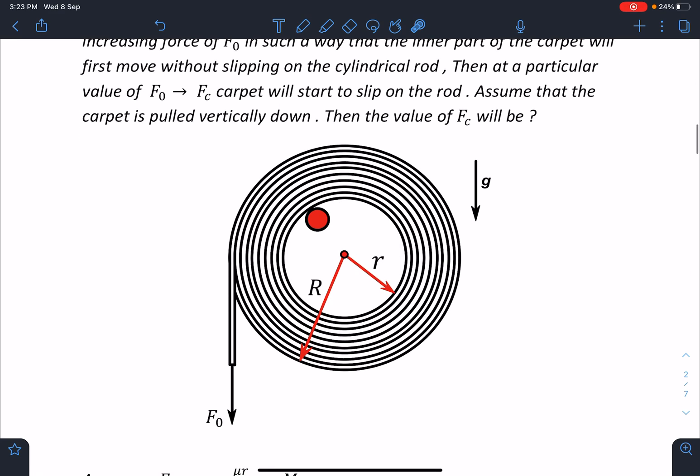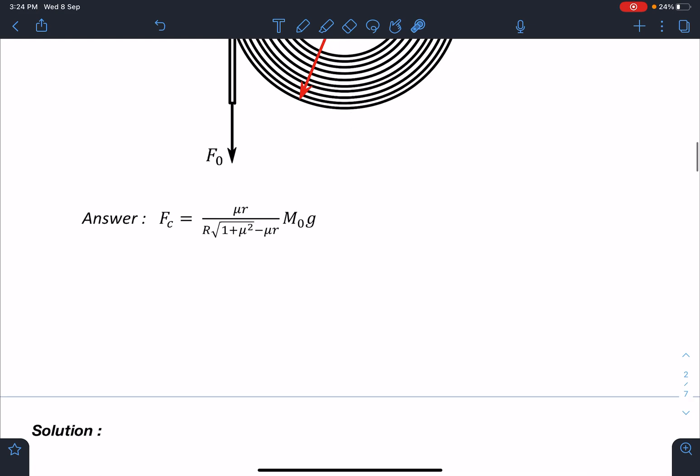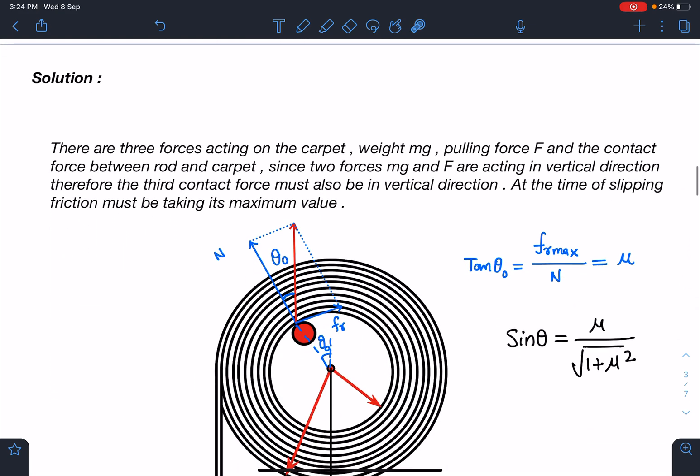So here you can see this is the arrangement and this is the cylindrical rod. This is the carpet here and we are applying a gradually increasing force and at a particular instant you will see there will be slipping at this point. So let us discuss the concept part here.